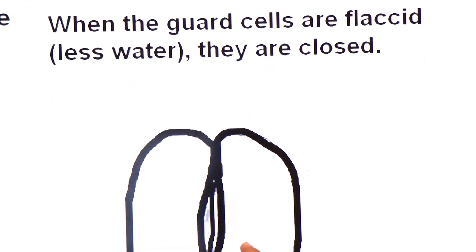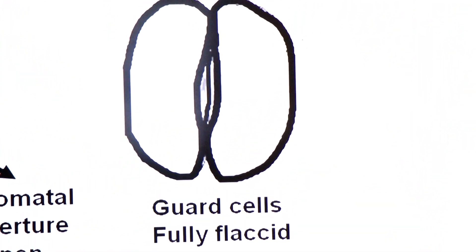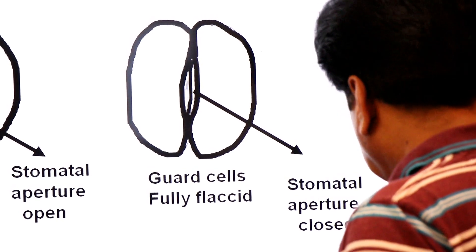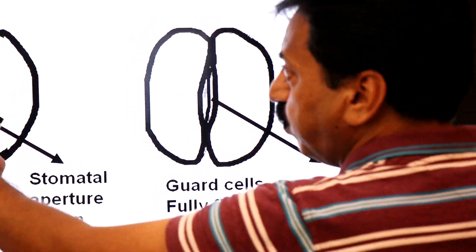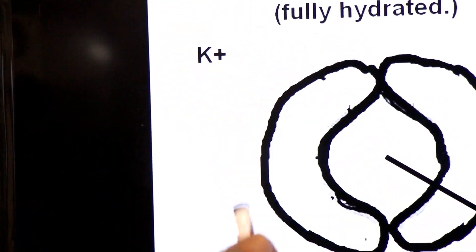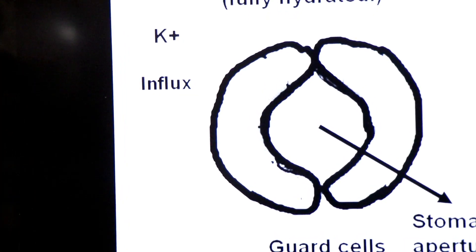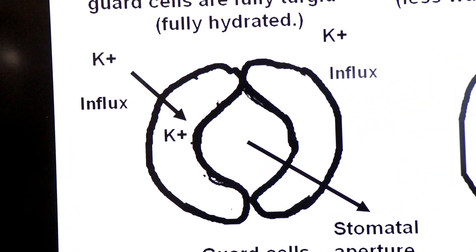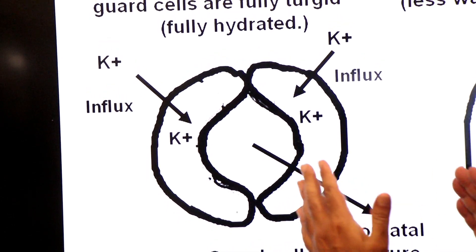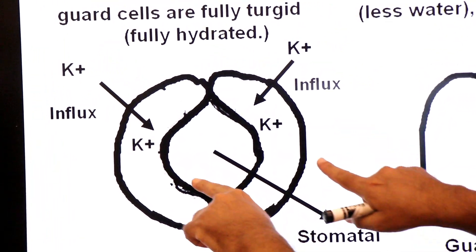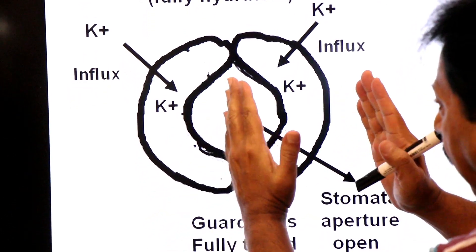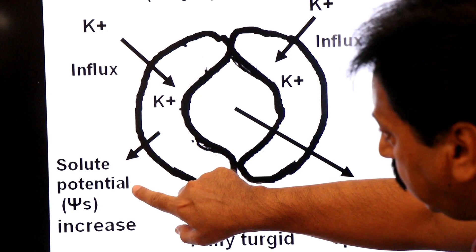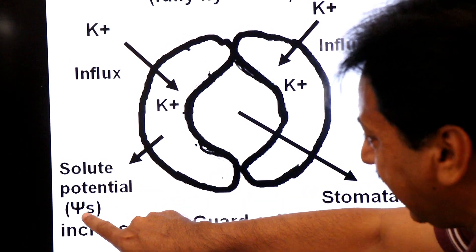The stomatal aperture is closed when guard cells are fully flaccid. Now, what is the role of potassium ions? During the day, there will be an influx of potassium ions — they move inward into the guard cells. Inward movement is called influx. These potassium ions enter the guard cells, and as solutes, they cause an increase in solute potential inside the guard cells. Solute potential is represented by the Greek letter psi-s (Ψs).